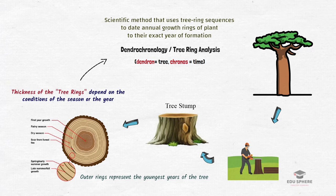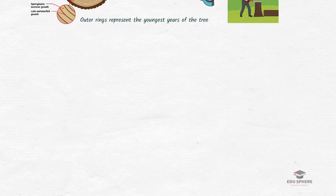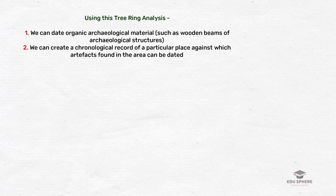In this method, both visible and microscopic details of tree rings are studied. Using this tree ring analysis, we can date organic archaeological material and create a chronological record against which artifacts can be dated. Besides, there is much we can learn about the past climate — how season-long weather conditions or periods of climate change have affected tree growth and how it may affect our climate in the future.